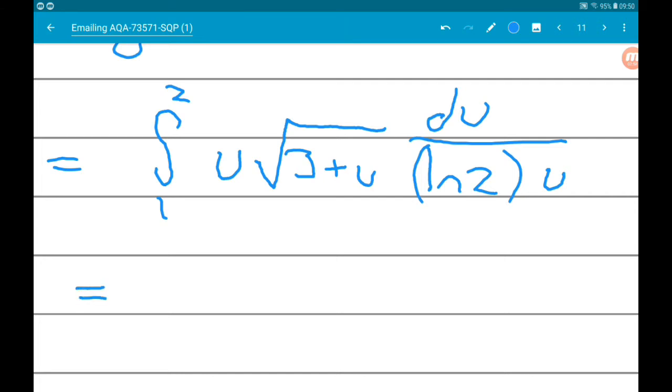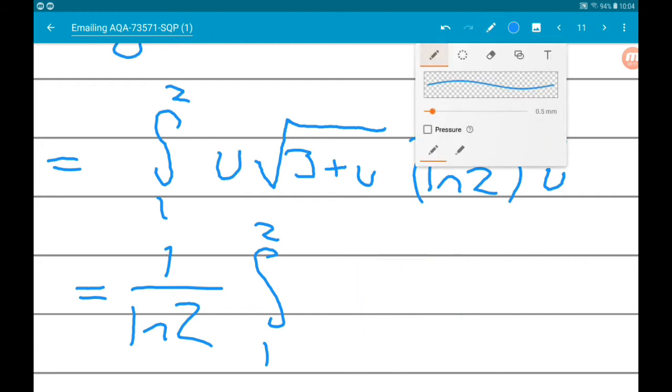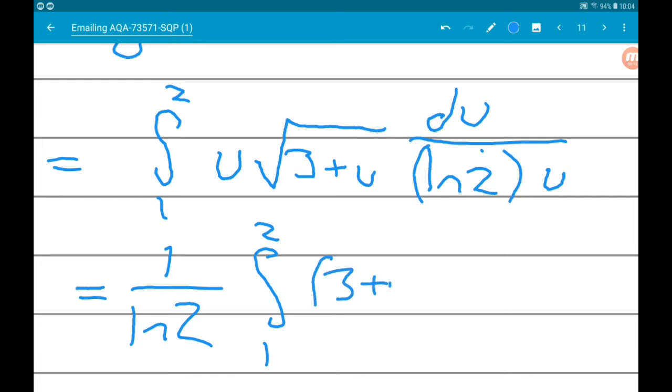The u's cancel out and we've got a constant of 1 over log 2. The integral between 1 and 2, the u's cancel out, the u at the start of the integral and the u beneath the du, and we are left with root(3 + u) with respect to u. Okay, so at this point it's actually probably nicer to write that in power form, so that's (3 + u) to the power of a half with respect to u.